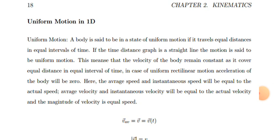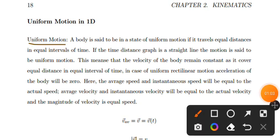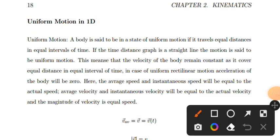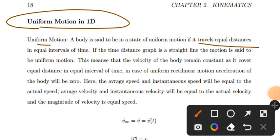Let's discuss uniform motion in one dimension. A body is said to be in a state of uniform motion if it travels equal distances in equal intervals of time. If the time-distance graph is a straight line, the motion is uniform motion.